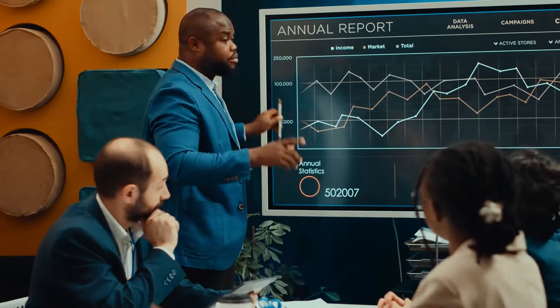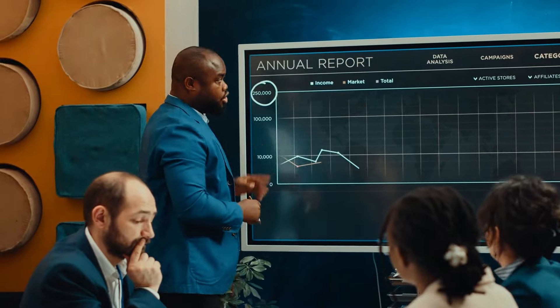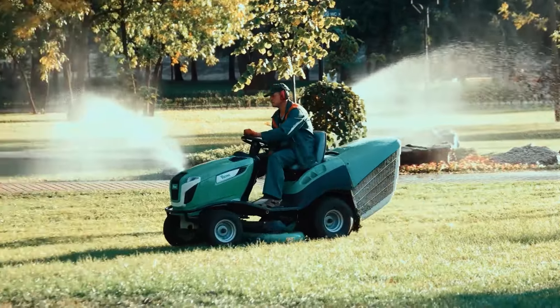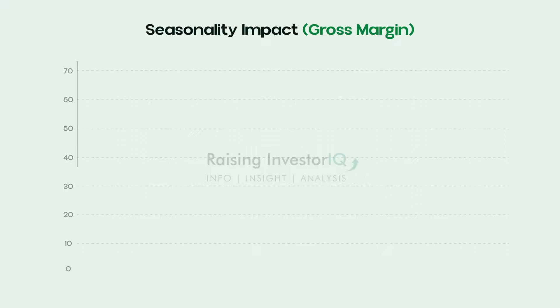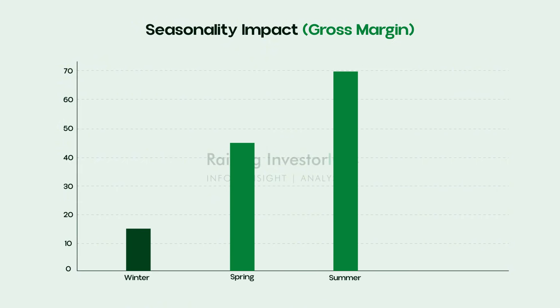A company in the tourism industry might see a spike in revenues during the summer but struggle during the off-season. For example, if you're considering investing in a seasonal business like a landscaping company, the margins may look great during spring and summer when demand is high, but in the winter those margins could shrink dramatically as fewer projects are taken on while fixed overhead costs like rent or equipment maintenance remain.